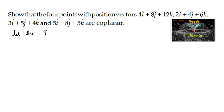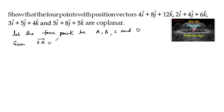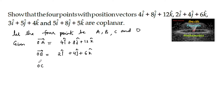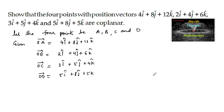Let the four points be A, B, C, and D, and their position vectors are given. So: OA = 4i + 8j + 12k, OB = 2i + 4j + 6k, OC = 3i + 5j + 4k, and OD = 5i + 8j + 5k. We need to prove that these four points are coplanar.